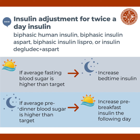These are the instructions for adjusting twice-daily insulins such as biphasic human insulin, biphasic insulin aspart, biphasic insulin lispro, or insulin degludec with aspart. If the average fasting blood sugar in the morning is higher than the target, increase the bedtime insulin dose. If the average pre-dinner blood sugar is higher than the target, increase the pre-breakfast insulin the following day.